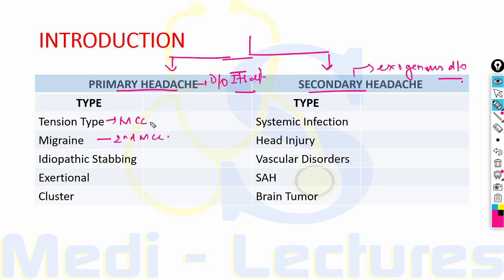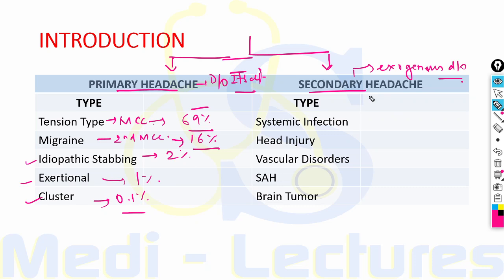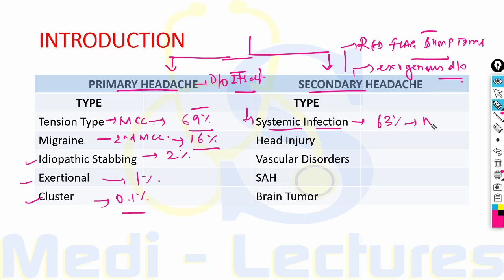Tension type headache accounts for 69% of total primary headache and migraine accounts for almost 16%. Other rare types are idiopathic stabbing and exertional headache, and very rarely cluster headache. Secondary headache usually presents with red flag symptoms, and the most common cause of secondary headache is systemic infection, which accounts for almost 63% of total secondary causes. The second most common cause is head injury. Rarely, vascular disorders, subarachnoid hemorrhage and brain tumor can present with headache.